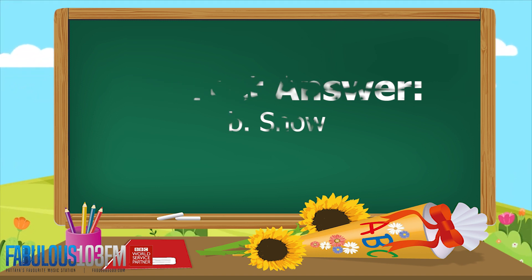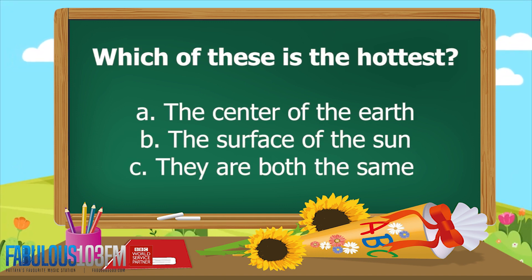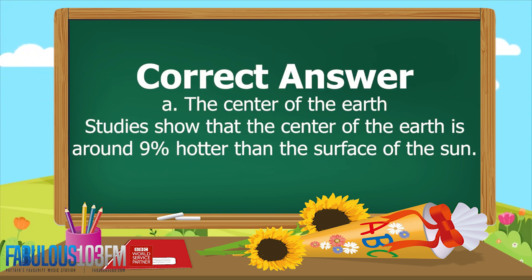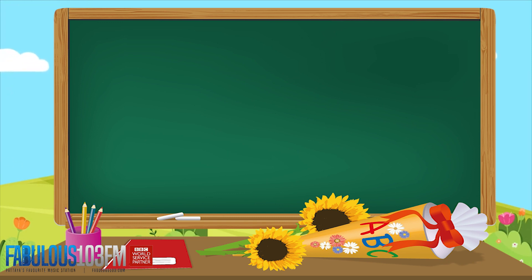The second question yesterday: which of these is the hottest — a) the center of the earth, b) the surface of the Sun, or c) they are both the same? And the correct answer is a) the center of the earth. Studies show that the center of the earth is around nine percent hotter than the surface of the Sun.